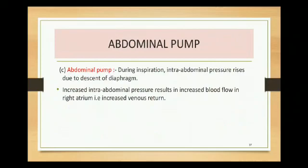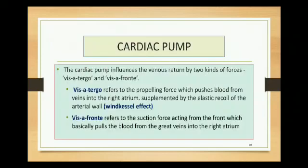The abdominal pump: during inspiration the intra-abdominal pressure rises because of the descent of the diaphragm, and this increased intra-abdominal pressure increases pressure in the right atrium, facilitating increased venous return. The cardiac pump influences venous return by vis-a-tergo or vis-a-fronti mechanisms. Vis-a-tergo is the propelling force that pushes blood from the deep veins into the right atrium, supplemented by the elastic recoil of the arterial wall - the Windkessel effect. During systole, blood flow in vessels is great; during diastole the heart is relaxing.